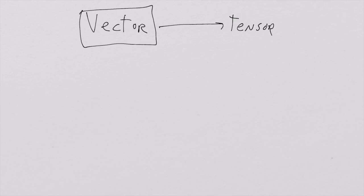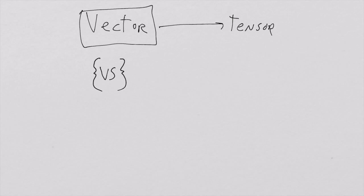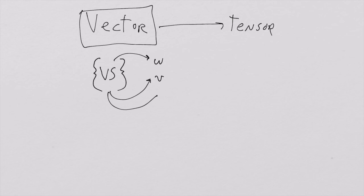Where do we begin? We begin with the notion that a vector is an element of a set, and that set is called a vector space — I'll call it VS for vector space. A vector space is a set, and every element in it is a vector. So if you come out of this vector space as the element W, V, or S, you are a vector.